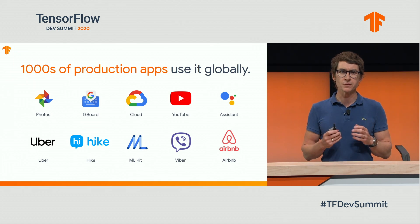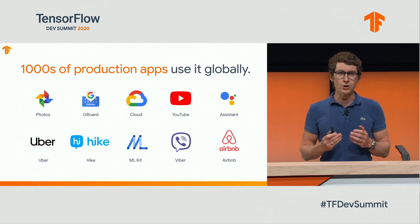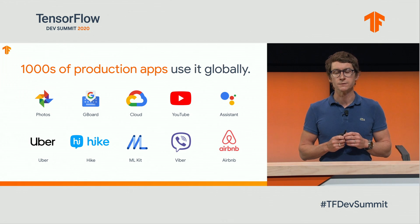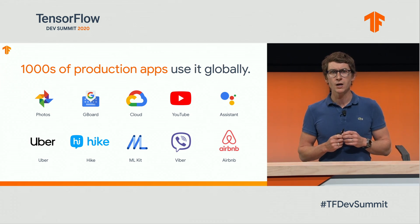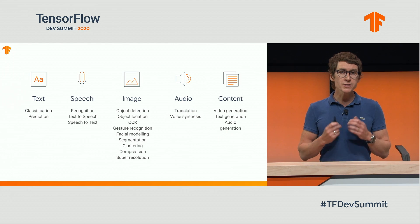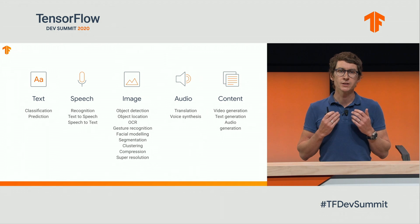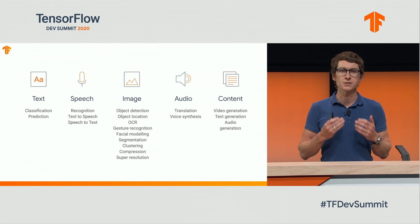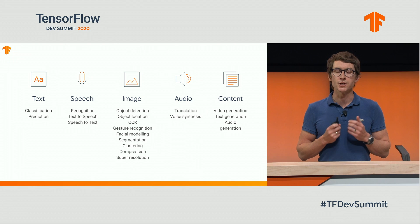This is a sampling of just some of the apps that use TensorFlow Lite: Google Photos, Gboard, YouTube, and the Assistant, along with really popular third-party apps like Uber, Hike, and many more. Developers are using TF Lite for use cases around image, text, and speech, but we are seeing a lot of new and emerging use cases around audio and content generation.